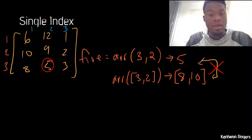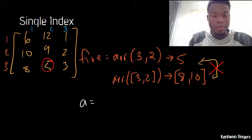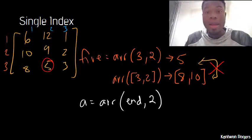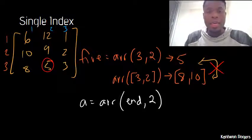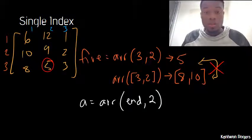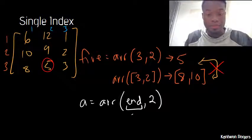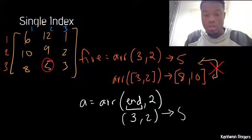We can use the row and column method to index certain spots. It's important to bring up the concept of the keyword `end` here. So if I had something like a is equal to my array of end comma 2 — before, we talked about `end` with vectors and linear indices as being the number of elements. However, when using `end` in the row/column method, `end` knows its context. Since I'm using `end` in the spot for designating my rows, `end` corresponds to the number of rows, which is 3. So it's the same as writing 3 comma 2, giving back the 5.